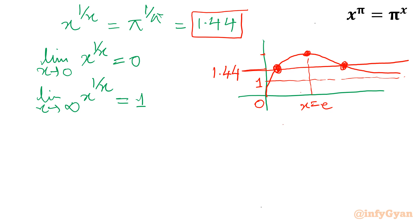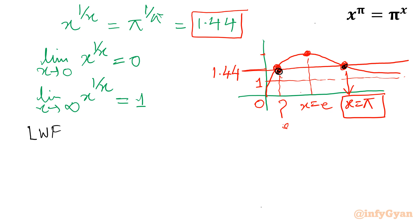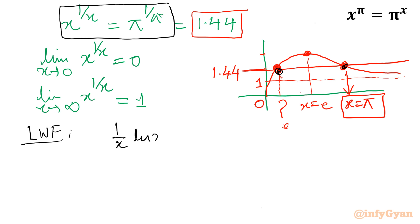From the graphical approach we concluded there are two real solutions. One is x = π, found using logarithms. To find the second solution, we use the Lambert W function. Taking ln of the equation x^(1/x) = π^(1/π) gives (1/x)·ln x = (1/π)·ln π.